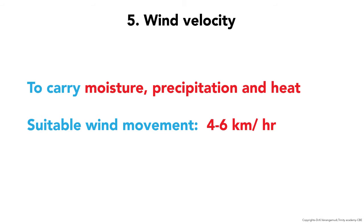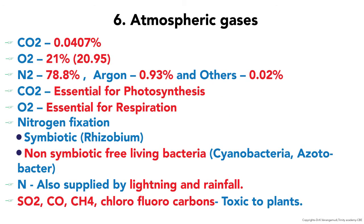Wind velocity: the main function of wind is to carry moisture, precipitation, and heat. Optimal wind movement is 4 to 6 km per hour. Atmospheric gases: CO2 content is 0.0407%, oxygen is 21%, and nitrogen is 78.8%. CO2 is essential for photosynthesis, oxygen for respiration. Nitrogen is fixed in soil symbiotically by Rhizobium bacteria and non-symbiotically by free-living bacteria like cyanobacteria and Azotobacter. Nitrogen is also supplied by lightning and rainfall. Sulfur dioxide, carbon monoxide, methane, and chlorofluorocarbons are toxic to plants.